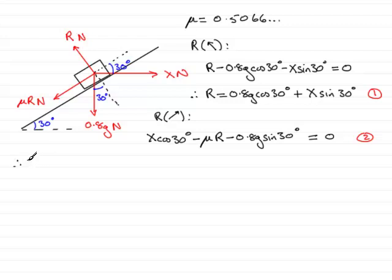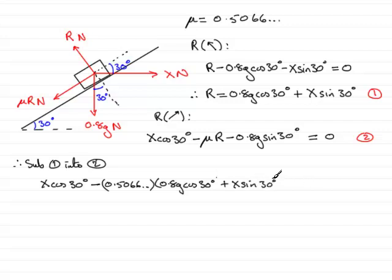So let's start off by subbing 1 into equation 2. If we do that, what we have is x cos 30 degrees minus mu - we know mu is 0.5066 and so on, let's put that in brackets - it's multiplied by r. R is this value up here, so that's 0.8g cos 30, and we've got plus x sin 30. So that's minus mu r, that's that term. Now we've just got this term to write in: minus 0.8g sin 30, and that equals 0.